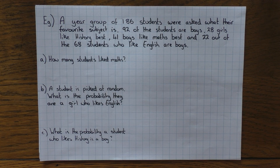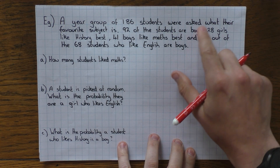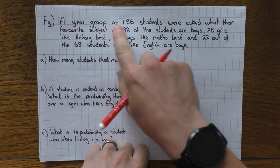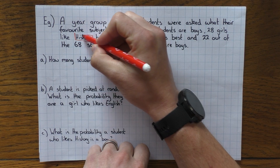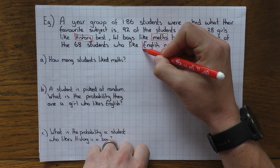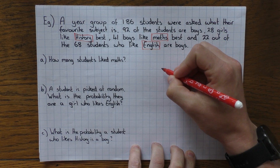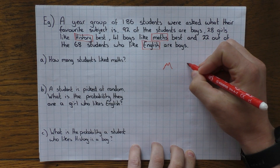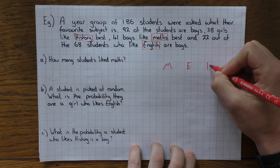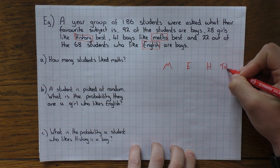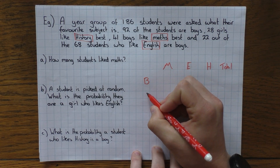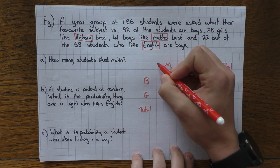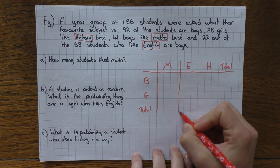The best way to tackle this is to draw a two-way table. Our headings will be the subjects: Maths (M), English (E), and History (H), plus a Total column. The other dimension is Boys (B) and Girls (G), again with a Total row. Let me draw those headings in with rough grid lines.